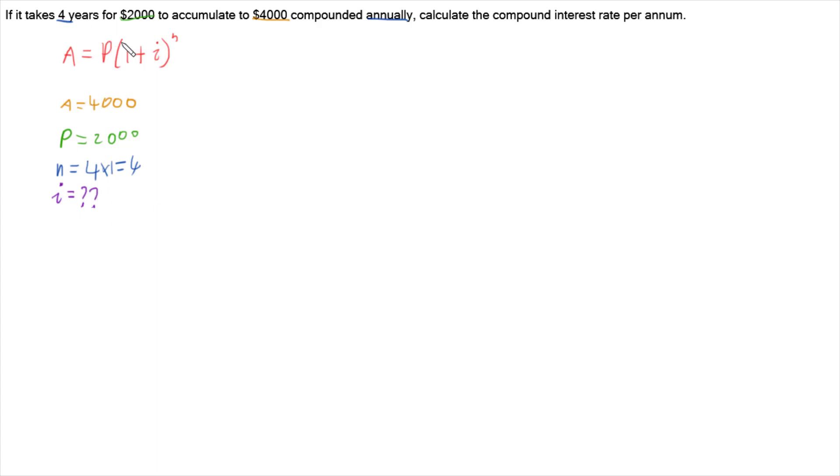So let's go and put these numbers into our rule and see if we can work out i. So A comes first, our starting amount, 4,000. And that's the same as our P, our principal, 2,000 multiplied by 1 plus this little i we're trying to work out, so we'll just leave it as i, to the power of n, which is 4.